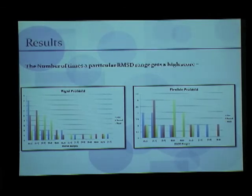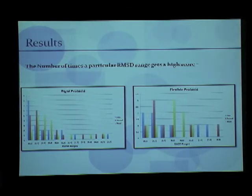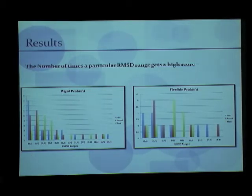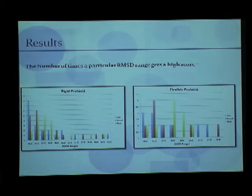Once all of this is done, this plot shows the RMSD range on the horizontal axis with the first, second, and third best predictions scored. At first sight, for rigid proteins the 0–1 range is the best and 0–2 is the second best, meaning these have predicted the best flexibility. For flexible proteins it is a bit more loose, because the RMSD range can go up to 0–4, which is intuitive — if we increase the RMSD range the protein would appear more flexible.